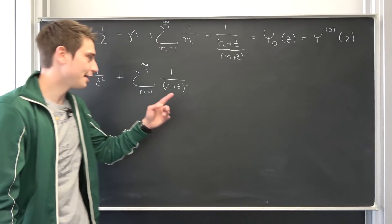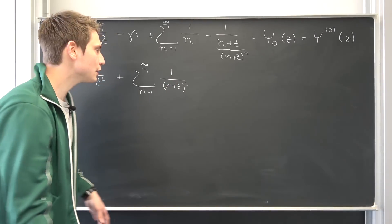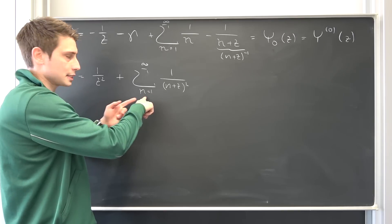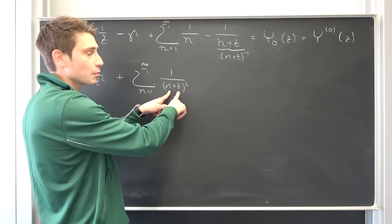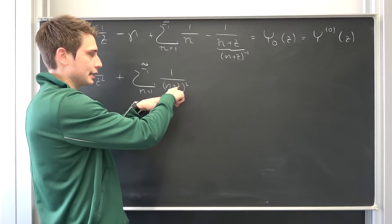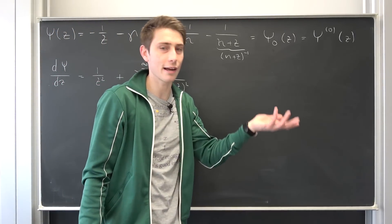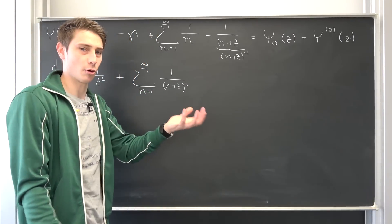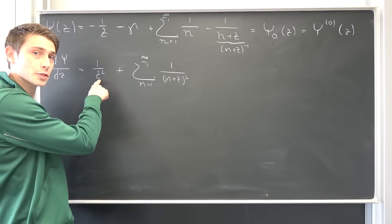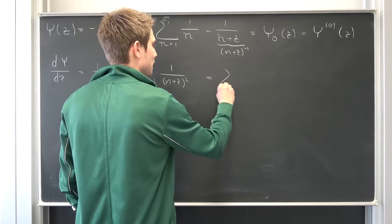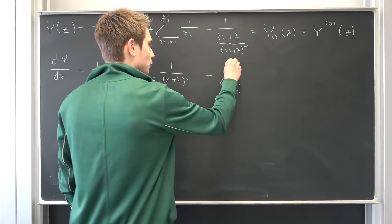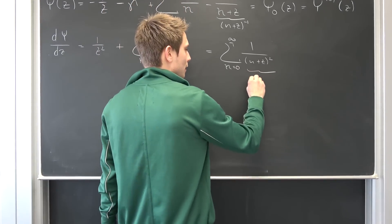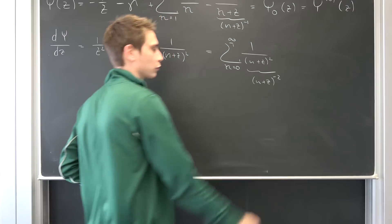I want you to notice something: we can make this a little bit more beautiful. We don't actually have a zeroth term where n equals 0, but if we did, it would be 1/(0+z)², which is just 1/z². And we already have that 1/z² term out front. So what we can do is rewrite the entire first derivative as a sum running from n equals 0 to infinity of 1/(n+z)², or equivalently (n+z)^(-2).